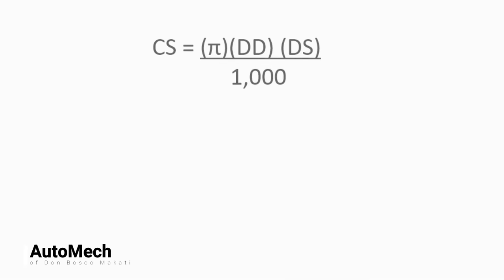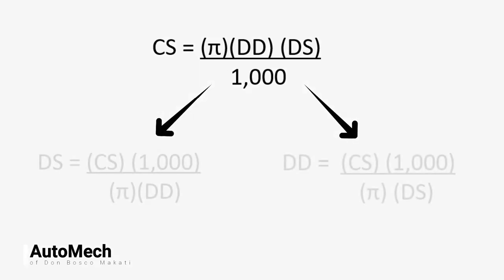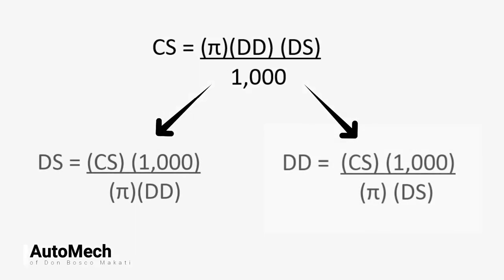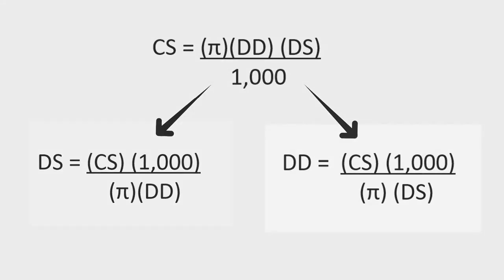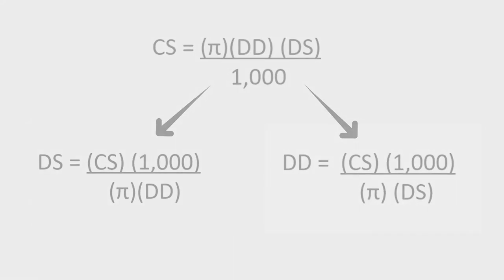Through the cutting speed formula, we can also solve for the drill speed and drill diameter used during a particular drilling operation. All we need to do is derive the cutting speed formula and we will be able to create another formula for finding the drill speed and drill diameter.